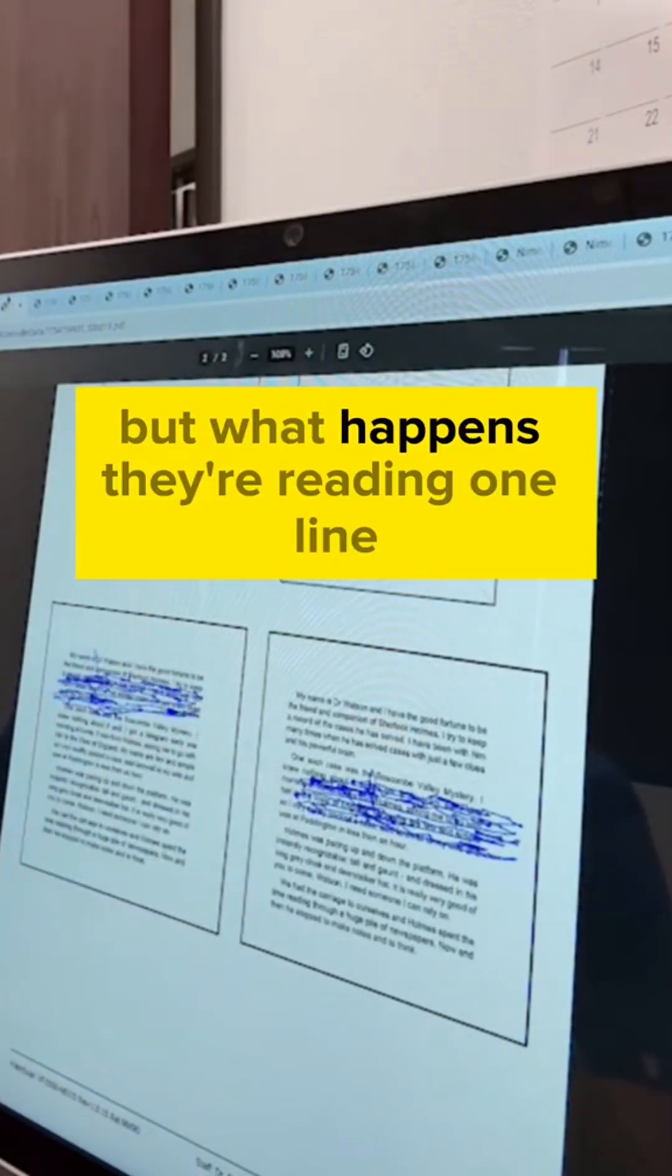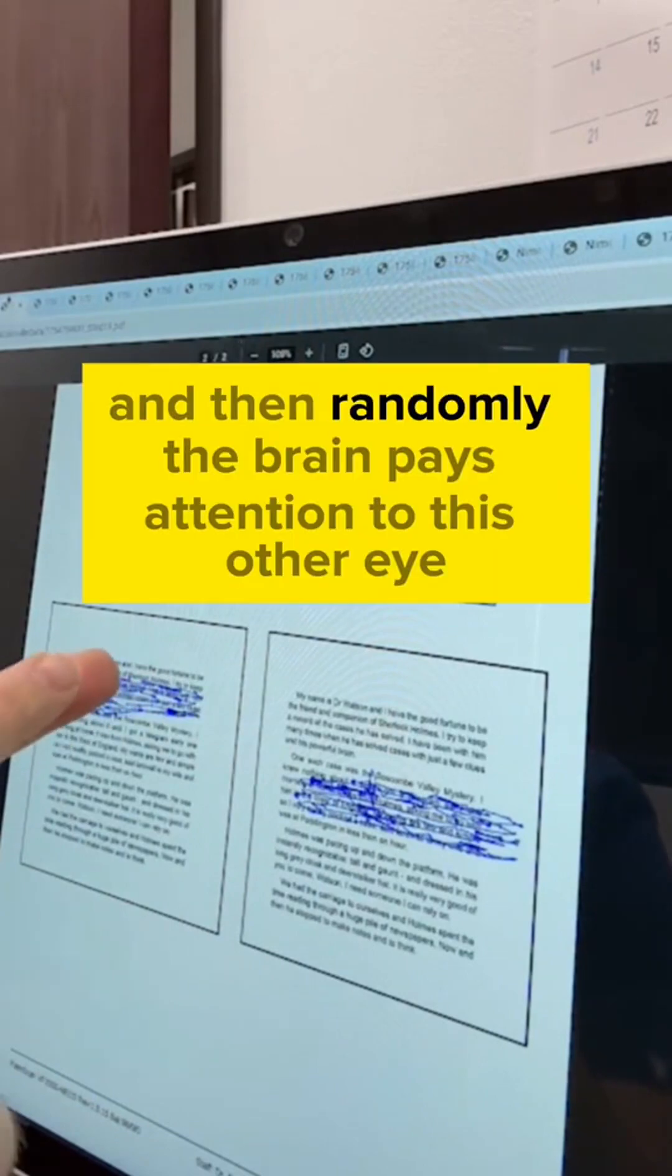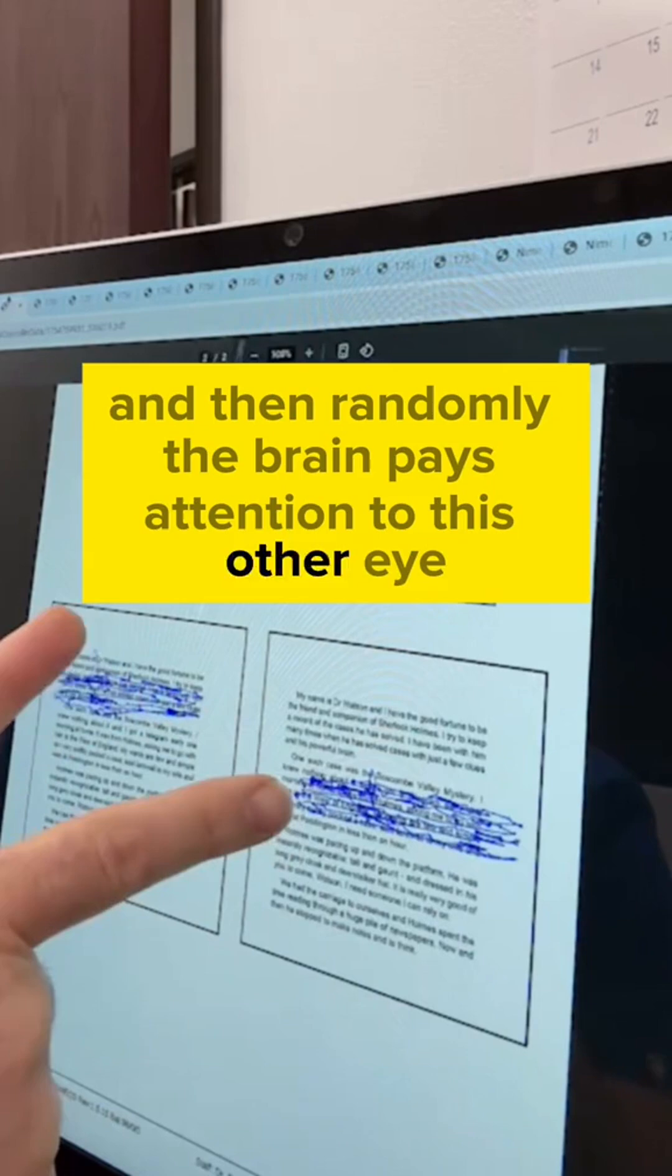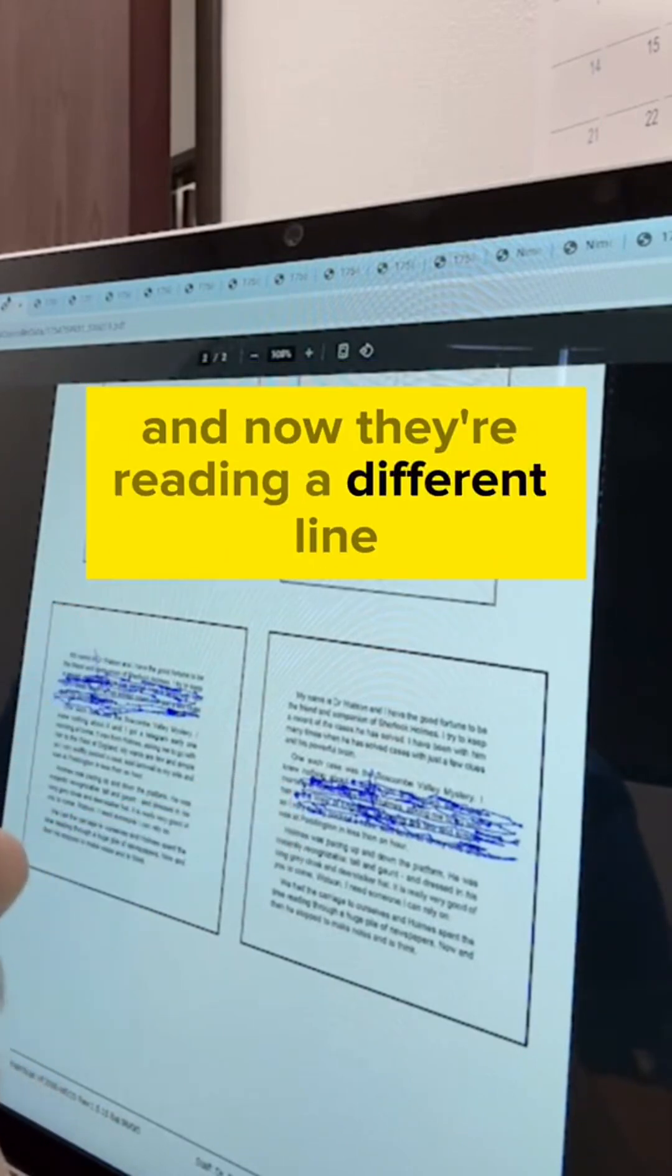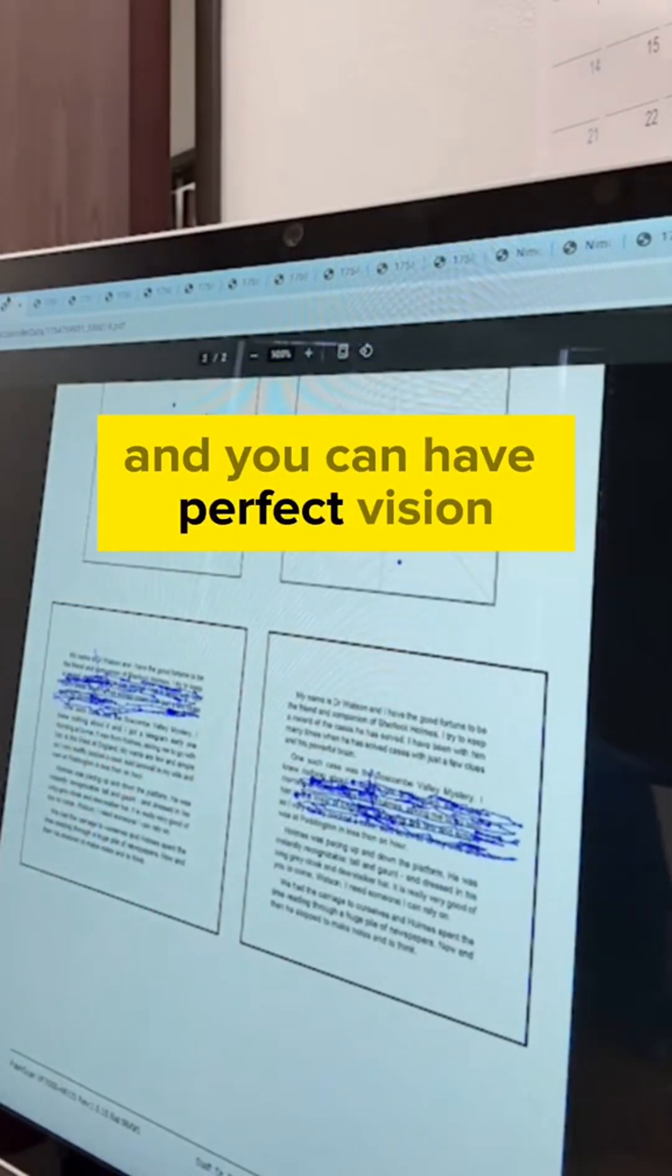But what happens, they're reading one line, and then randomly the brain pays attention to this other eye, and now they're reading a different line. And this is where these reading and focusing issues come from. And you're going to have perfect vision.